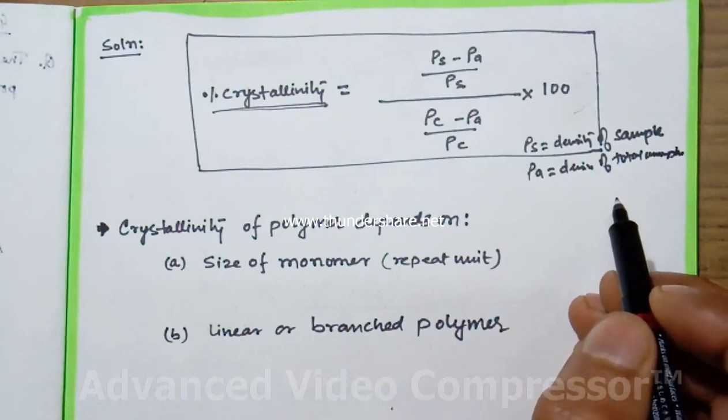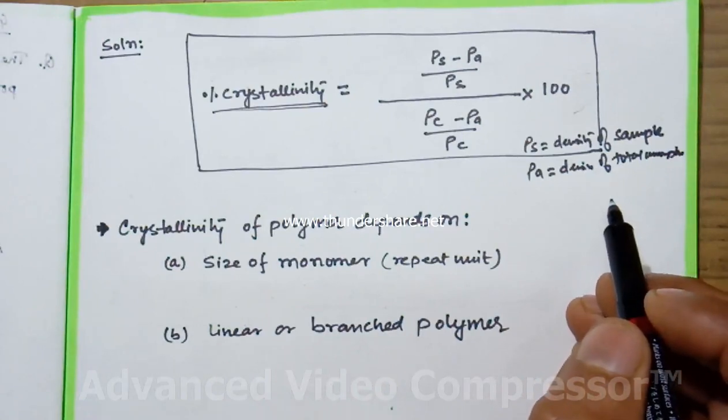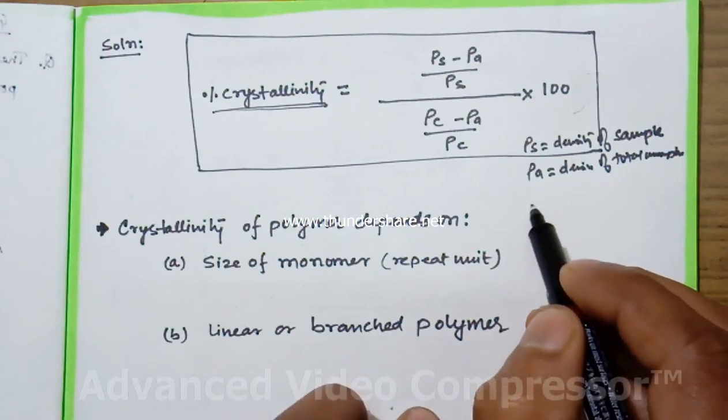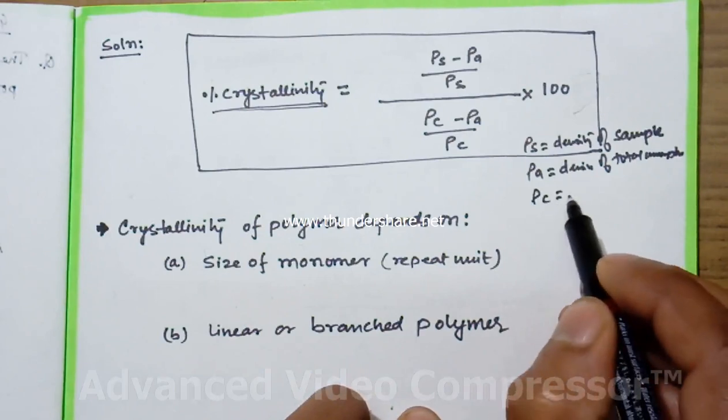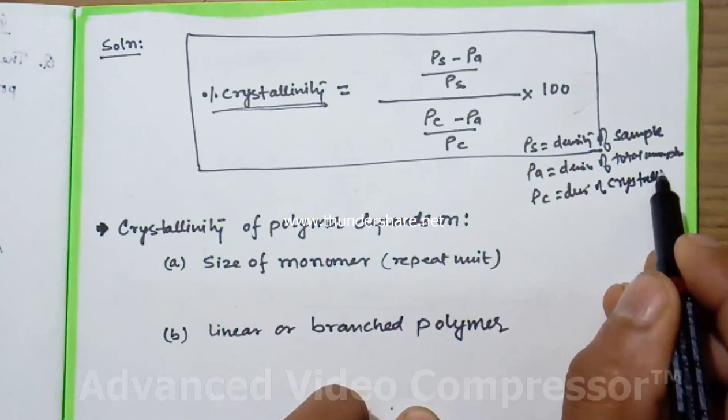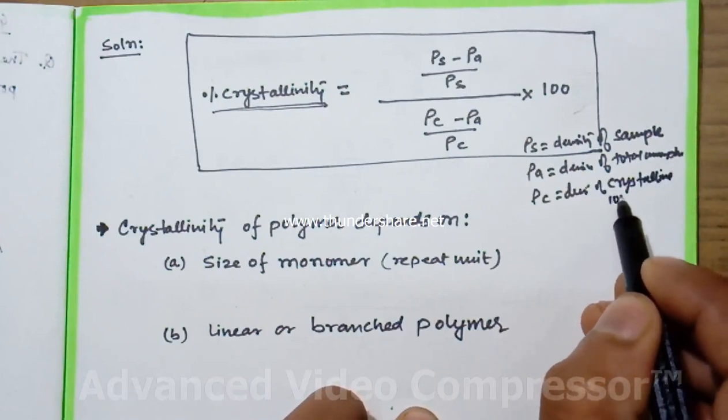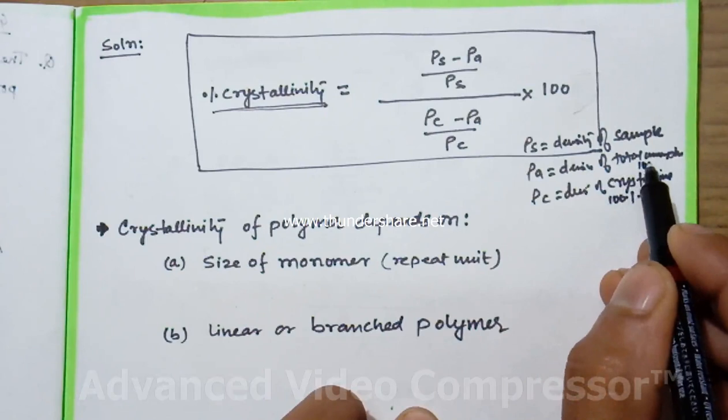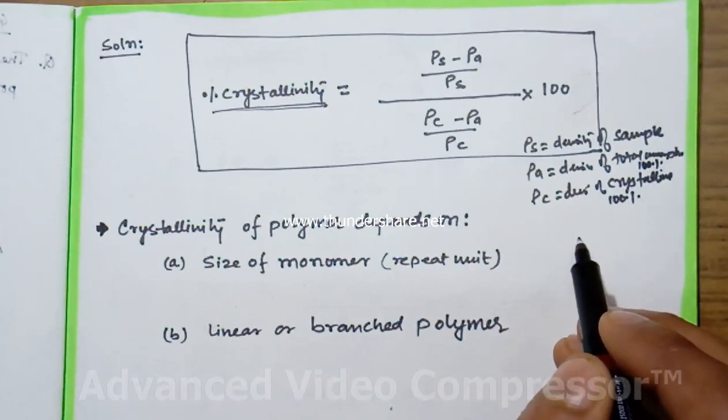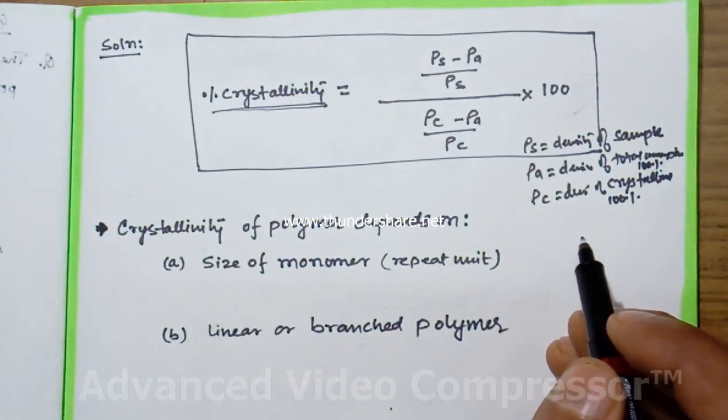The polymer which you are having, if you consider it as totally amorphous, then what will be the density? That density is rho a. And rho c is density of crystalline, 100% crystalline state of the same polymer.